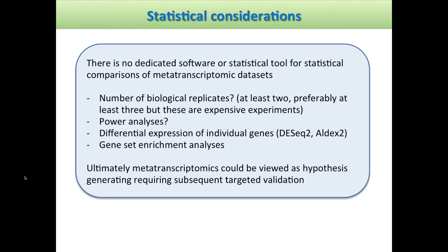One thing we can start doing is applying RNA-seq-like tools — DEseq2, ALDEX2 — to identify differential expression of individual genes. If we can identify genes that are differentially expressed, then we can do these kinds of gene-set enrichment analyses. But ultimately, given the problems with statistics and the lack of power with these kinds of datasets, we should really be viewing these metatranscriptomics experiments more as hypothesis generation that we should then be following up — as someone mentioned earlier — with qPCR experiments to actually verify in a larger setting with a large number of biological replicates that what you're seeing is really true.